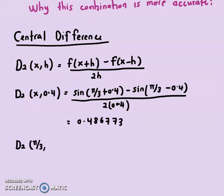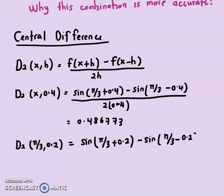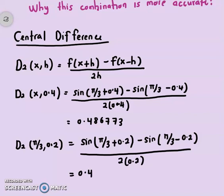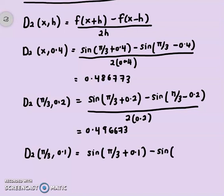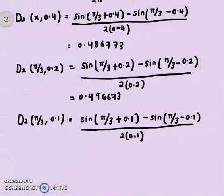For H = 0.2: D2(π/3, 0.2) = [sin(π/3 + 0.2) − sin(π/3 − 0.2)] / (2 × 0.2). Using a calculator, you get 0.496673. Lastly, for H = 0.1: D2(π/3, 0.1) = [sin(π/3 + 0.1) − sin(π/3 − 0.1)] / (2 × 0.1). Using your calculator gives 0.499167.